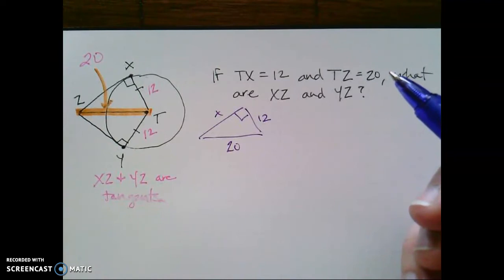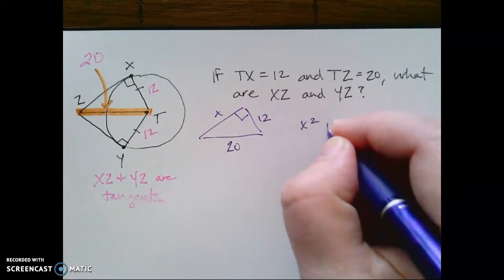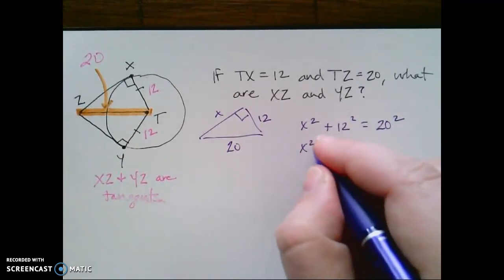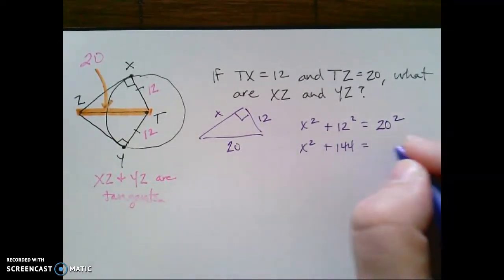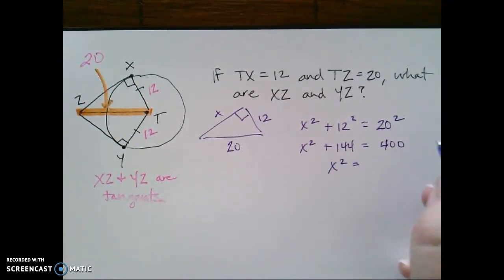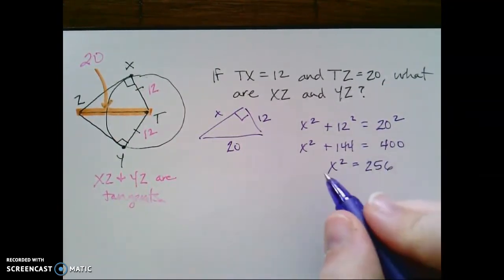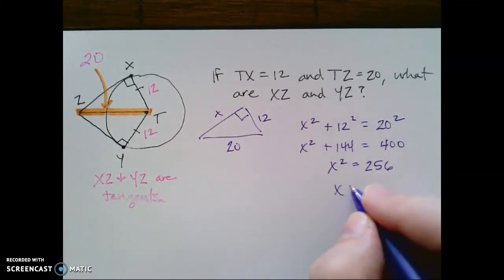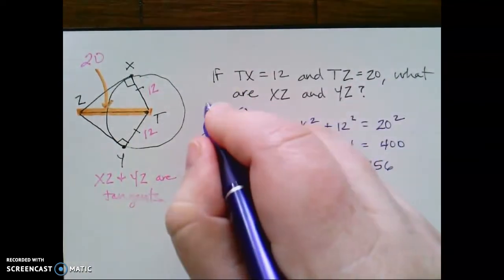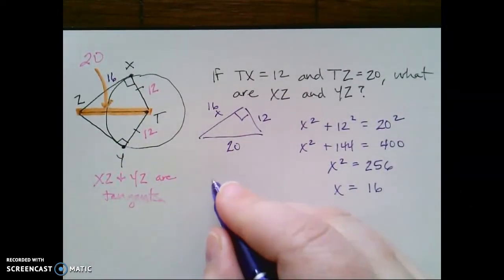And if I do this right, I should notice something kind of interesting. So x squared plus 12 squared equals 20 squared. That means x squared plus 144 is equal to 400. Subtract. 400 minus 144 is 256. And then the square root of 256 is 16. So that makes this side length here 16. That was xz.